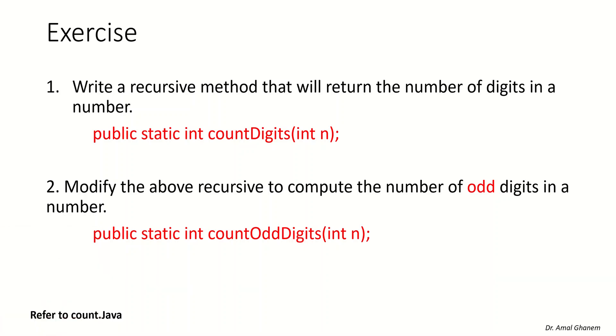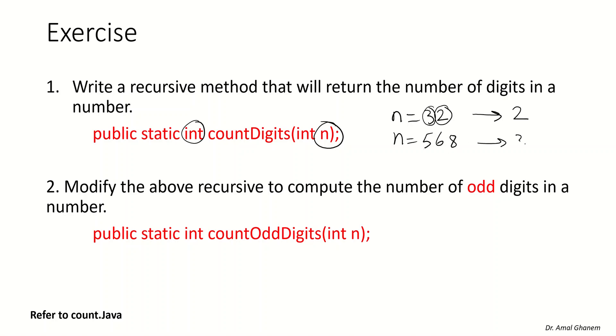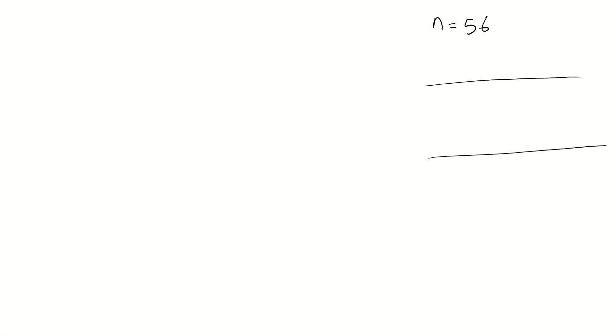If we have the number 32, we count two digits and return 2. If n is 568, we have three digits and return 3. To work with digits recursively, we divide by 10 each time. So calling the method with n/10 on 56 gives 5, because dividing by 10 removes the rightmost digit — the six is removed, leaving five.